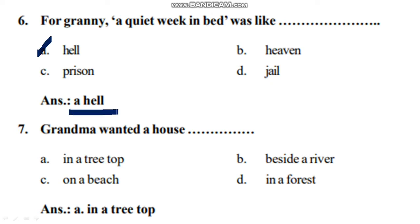Next question: Grandma wanted a house in a — Option A: tree top, Option B: beside a river, Option C: on a beach, Option D: in a forest. The right answer is Option A — in a tree top. That was grandma's wish and her need.